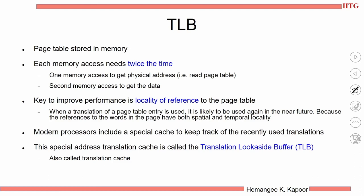The TLB follows the principle of locality of reference: if I have used a VA to PA translation for process p1, I might reuse that same translation again and again. There will be spatial and temporal locality in these address translations. Most modern processors use a special cache to keep track of the most recently used translations, and that cache is called the translation look-aside buffer.